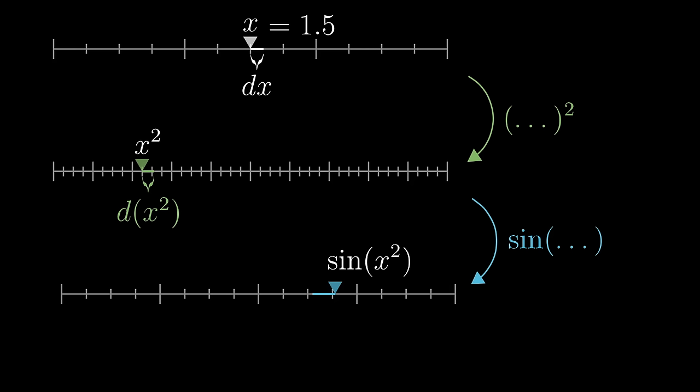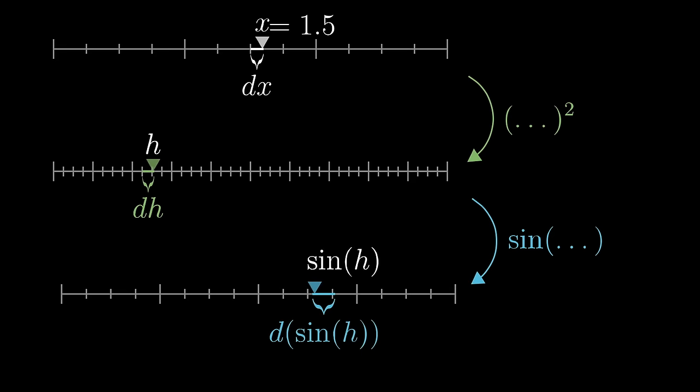And in fact, I'm going to go one step further. I'm going to give a new name to this x squared, maybe h, so that instead of writing d x squared for this nudge, we write dh. And this makes it easier to think about that third value, which is now pegged at sine of h. Its change is d sine of h, the tiny change caused by the nudge dh. And by the way, the fact that it's moving to the left while the dh bump is going to the right, that just means that this change d sine of h is going to be some kind of negative number.